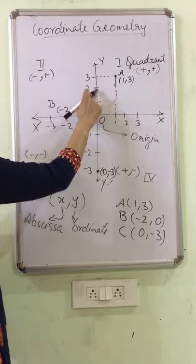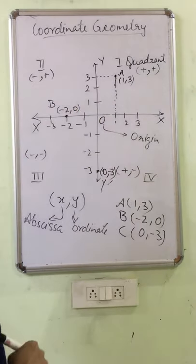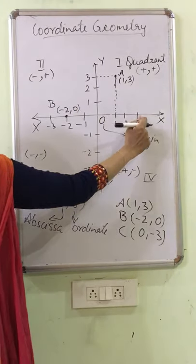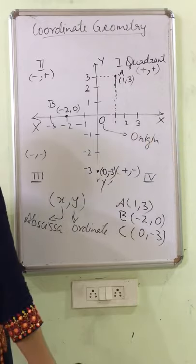If I have to name this point, then this is 0, 2. If I have to mention this point, then this is 3, 0.